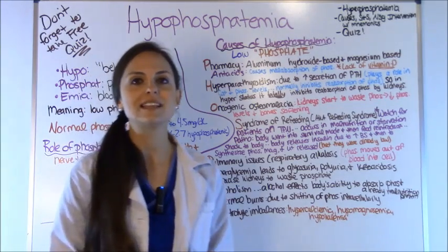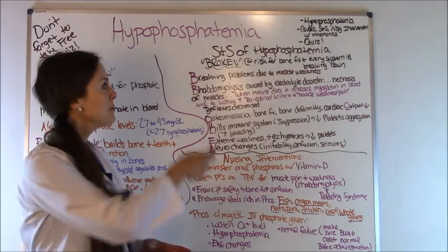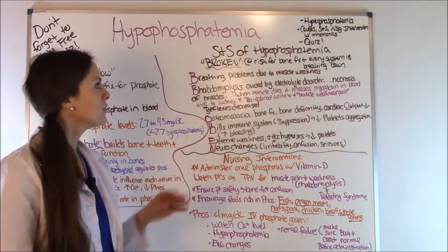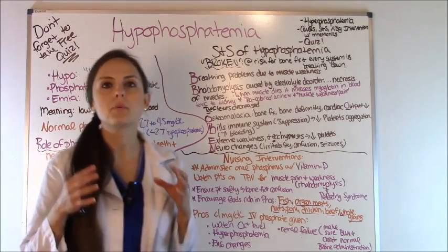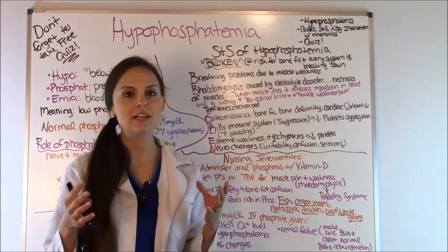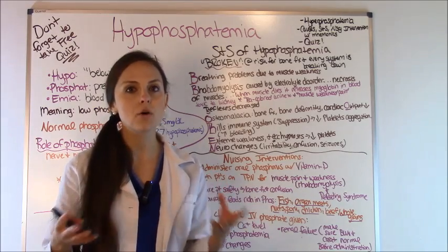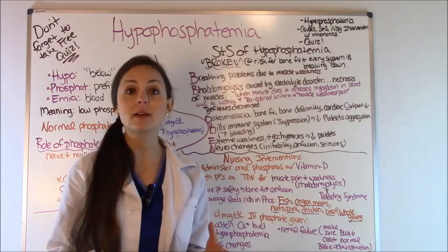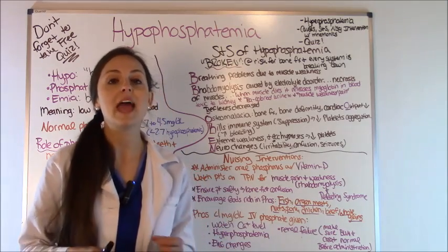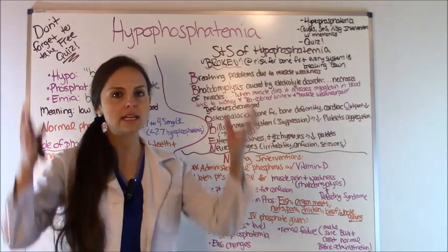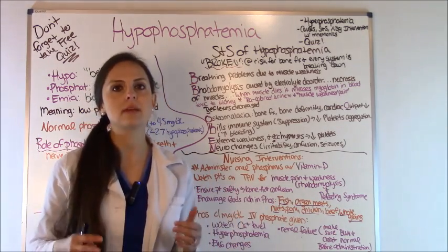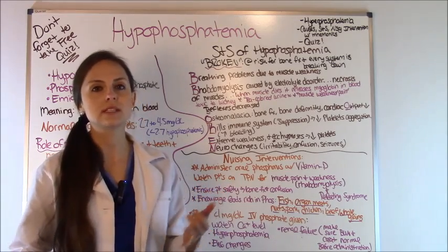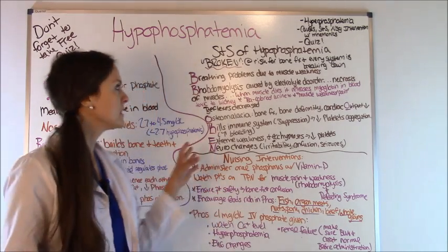Now let's look at the signs and symptoms. To help you remember them, use the word BROKEN — because this patient is at risk for bone fractures and every system of the body is breaking down due to low phosphate: the immune system, the respiratory system, the neurological system, everything.